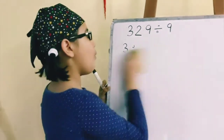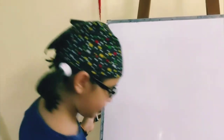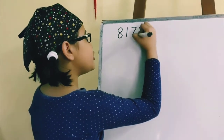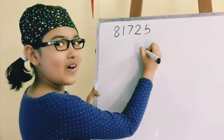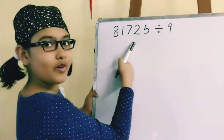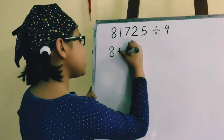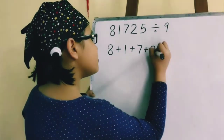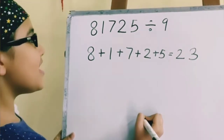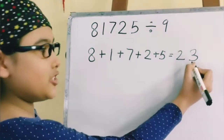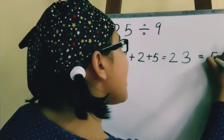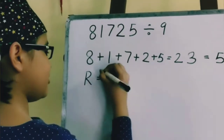Let's try with one more big number: 8, 1, 7, 2, 5 divided by 9. You have to do the digit sum of this number. 8 plus 1 plus 7 plus 2 plus 5 is equal to 23. As this is a double-digit number, we have to find the digit sum of 23. So, 2 plus 3 is equal to 5. The remainder is 5.